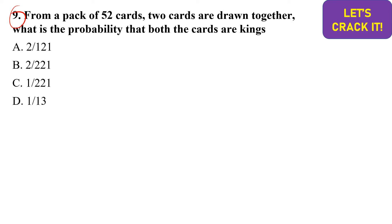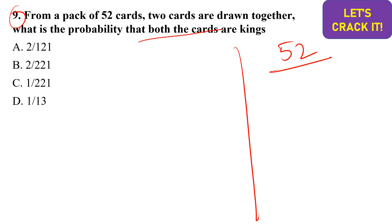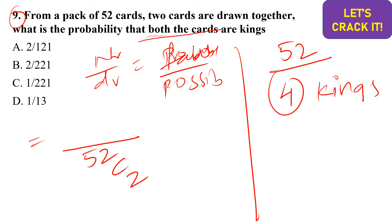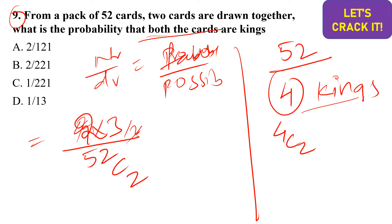The ninth question is related to probability with a deck of cards. Two cards are drawn from 52 cards. What is the probability that both cards are kings? The denominator is 52C2 — the number of ways to choose any 2 cards from 52. There are 4 kings in the deck, so the numerator is 4C2 = (4 × 3)/2 = 6.